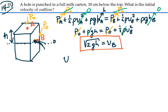So the velocity at point B, which is the hole, is going to equal the square root of 2gh, where h is the height of the top of the milk carton above that hole.